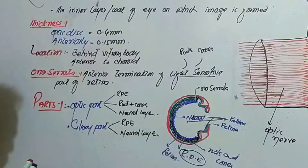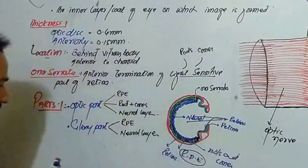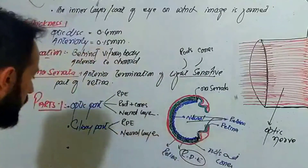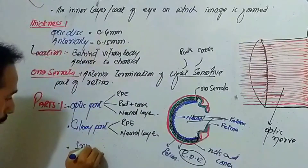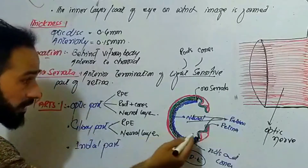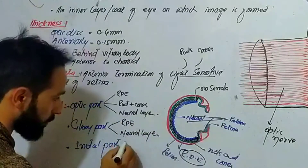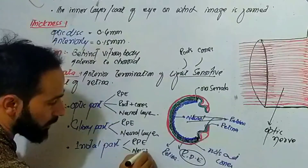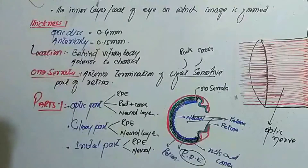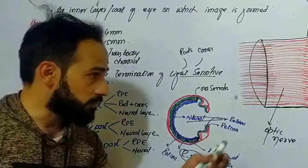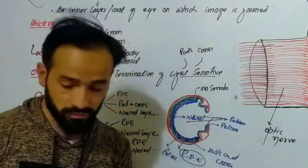The part of the retina which is present behind the iris is called the iridal part. This part also does not contain rods and cones. It also contains the retinal pigment epithelium and the neural layer. So the retina has three important parts: the optic part, the ciliary part, and the iridal part.